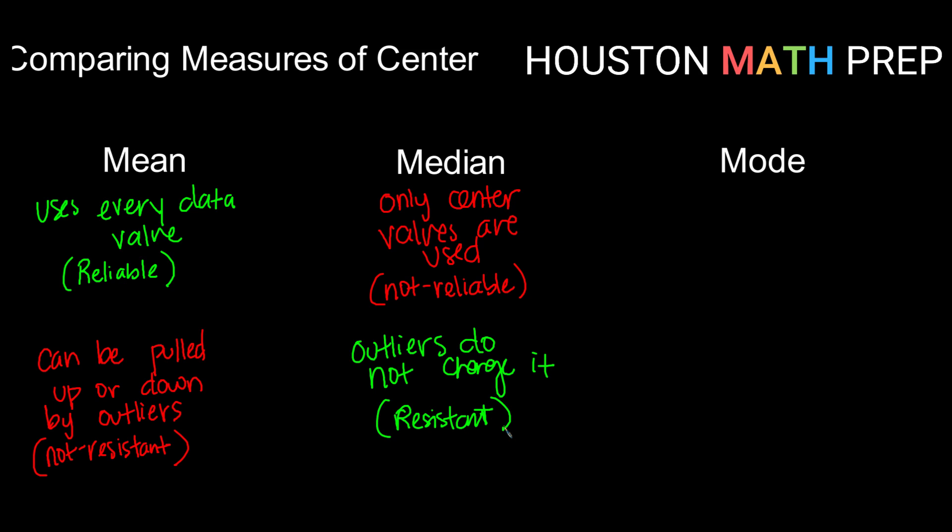All right, and our final measure of center is the mode. The mode has kind of mostly cons. The mode is kind of a weird measure of center. It is interesting to find, but it doesn't usually tell us much about the data in general. It just tells us that one or two values appear a lot. That doesn't necessarily tell us about the center of our data. So we're going to say this one is not usually representative.